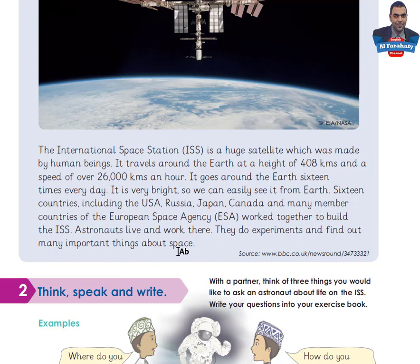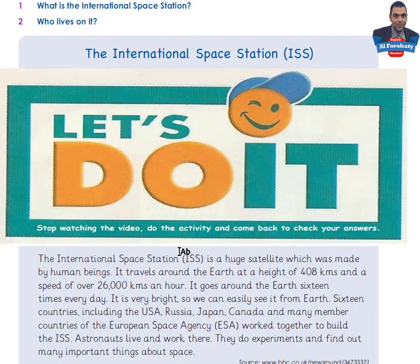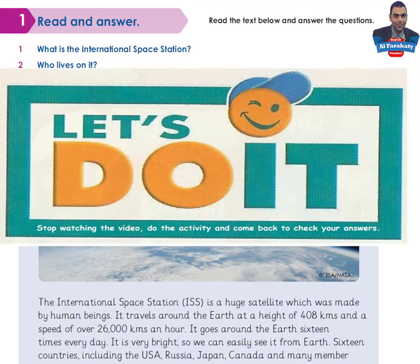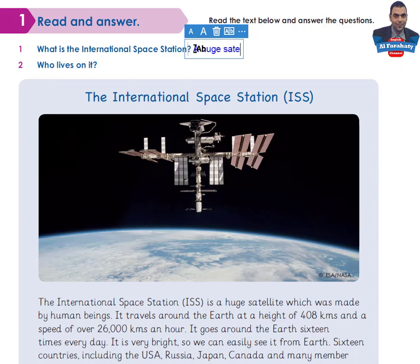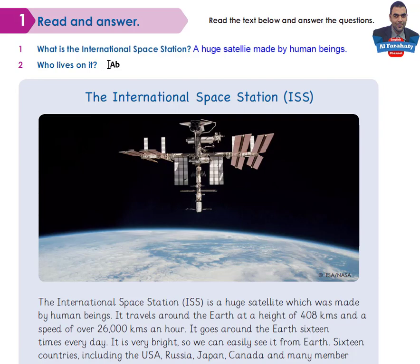Now take your time to answer these two questions. I'll write the answers in order to check yours. What is the International Space Station? It's a huge satellite made by human beings. Who lives on it? Excellent — Astronauts.